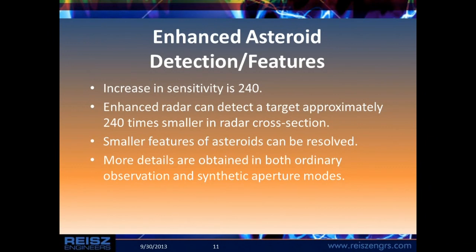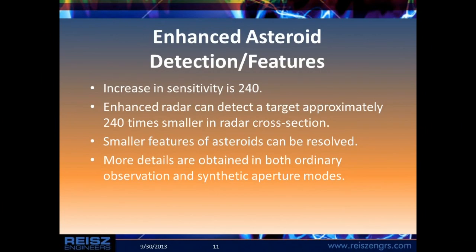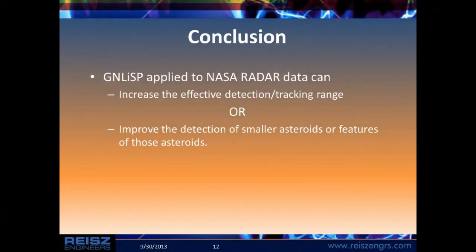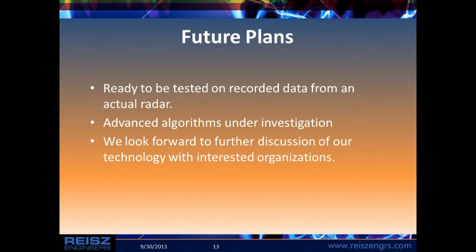We can resolve smaller objects and smaller objects on a larger asteroid, and can do this in both ordinary observations and in synthetic aperture mode. We can apply GenLISP processes to NASA radar data — increasing the effective detection range or improving the detection of smaller asteroids. We believe we can also apply this to laser radar proposals. Future plans: we need some NASA radar data to show that it works in the real world. We have advanced algorithms under investigation, which seem to work when you have a fairly good signal-to-noise ratio, and we look forward to further discussions with NASA or other interested parties.